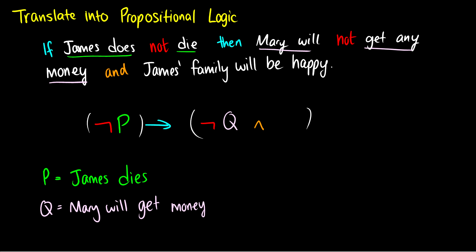And finally, James family will be happy. So we can call this R, define this as James family will be happy. And then finally, we can stick this into our last slot, R. So if not P, then not Q and R. And when we just have one statement on its own, we can just remove the brackets. So this says, if it is not the case that James dies, or if James does not die, then it is not the case that Mary will get money, and James family will be happy.